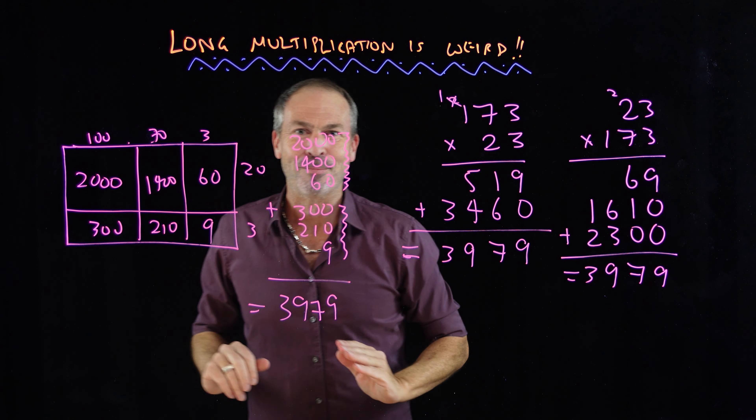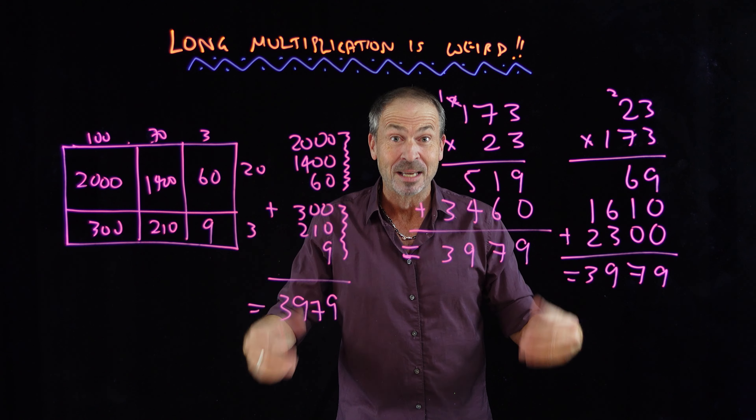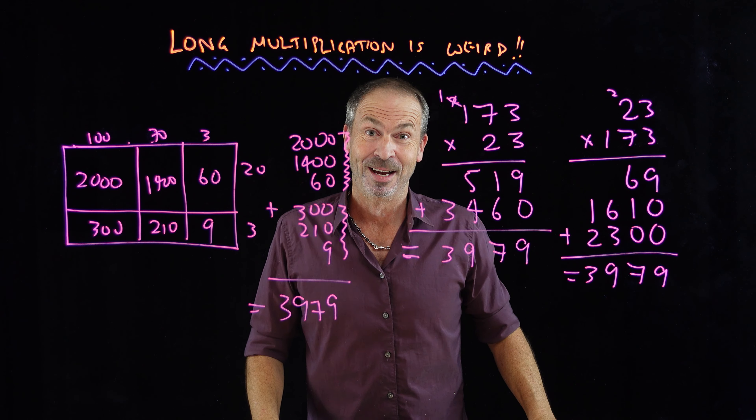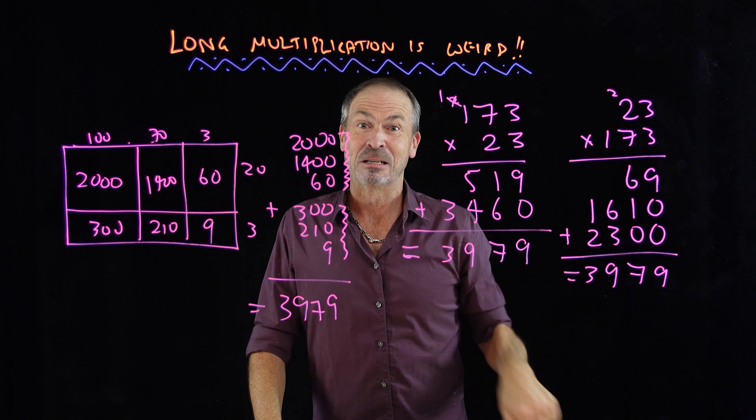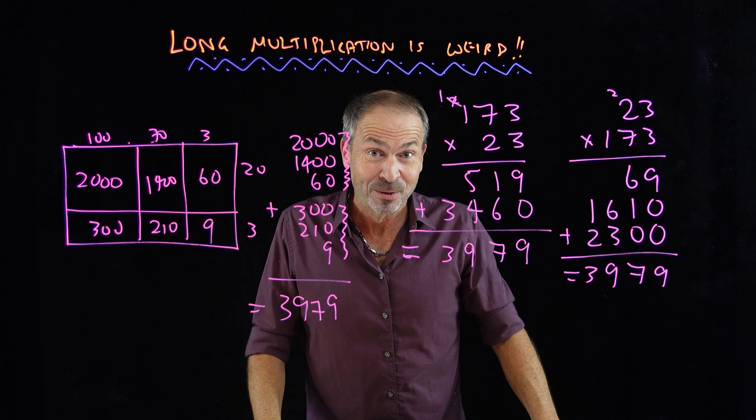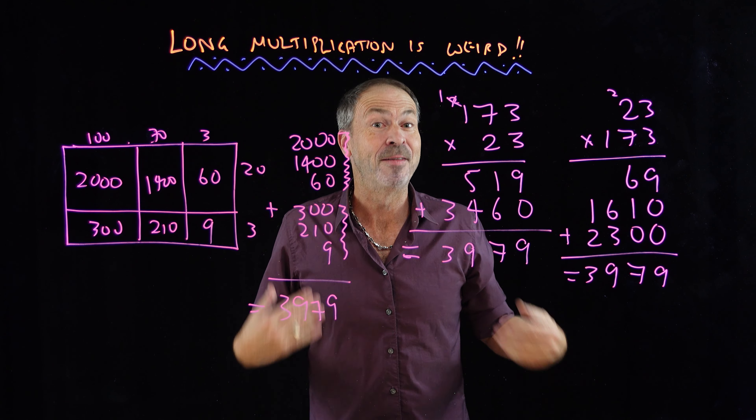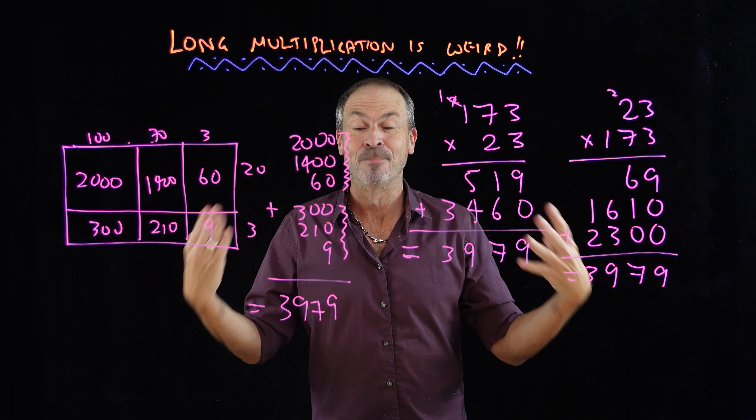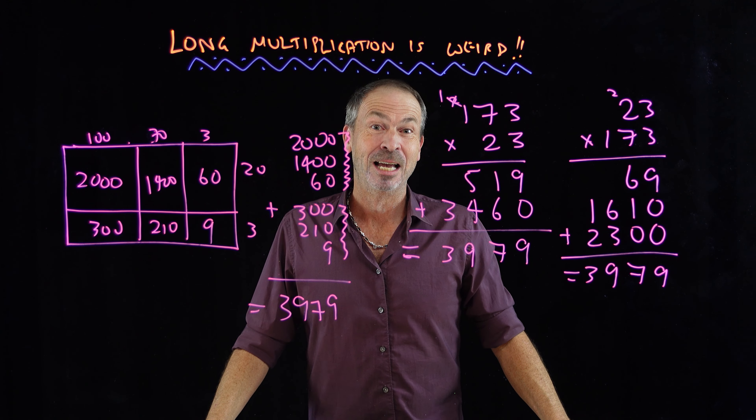So there's the long multiplication algorithm that's not actually mysterious. It really is this area model in disguise. The trouble is most curricula don't teach what it really is, so then it becomes this mysterious thing to memorize. Do 50,000 problems on it, you'll feel familiar to it, and then you'll feel like you understand it. Again, people tend to equate familiarity with understanding.